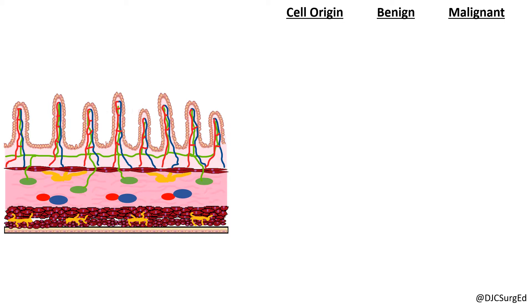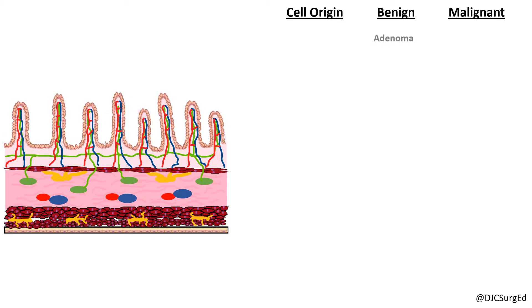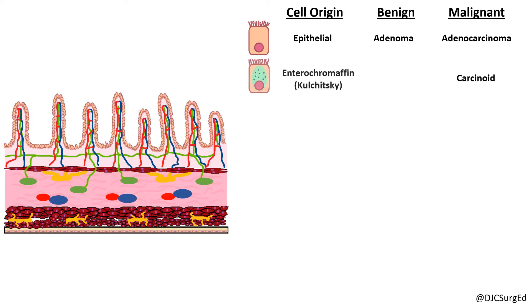Tumors of the epithelium can include benign adenomas or malignant adenocarcinomas of epithelial cell origin, as well as malignant carcinoid tumors from enterochromaffin or Kulchitsky cells of the small intestine crypts.